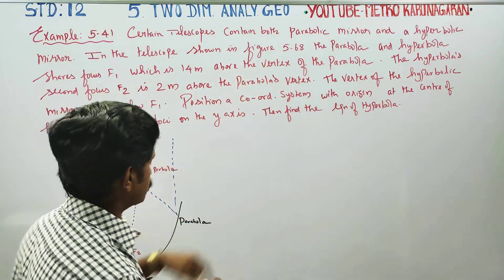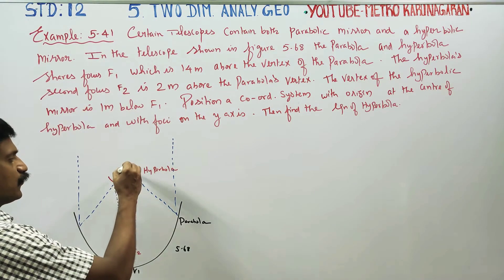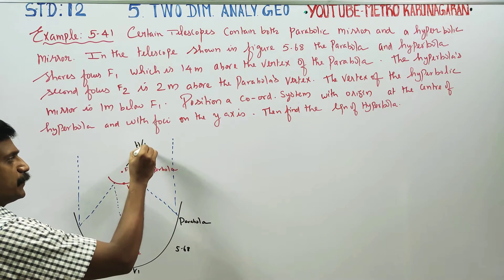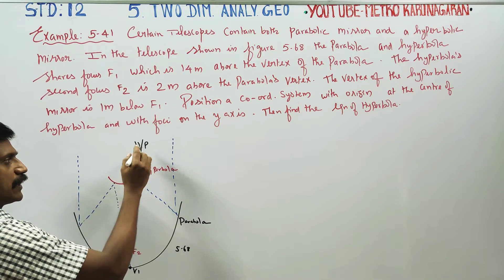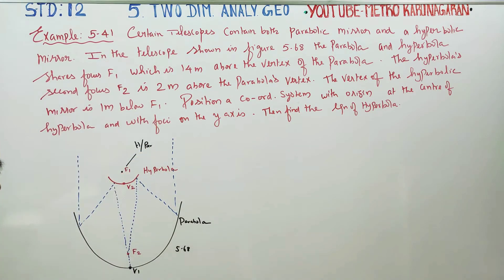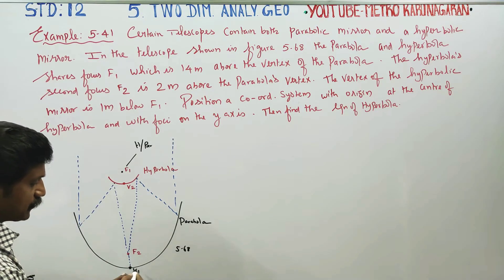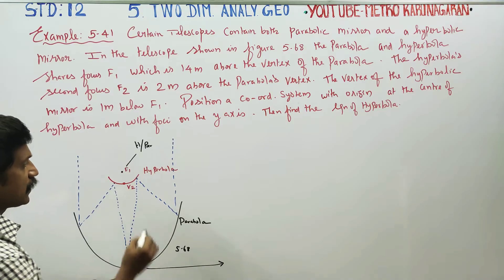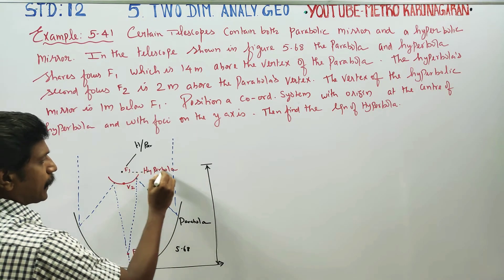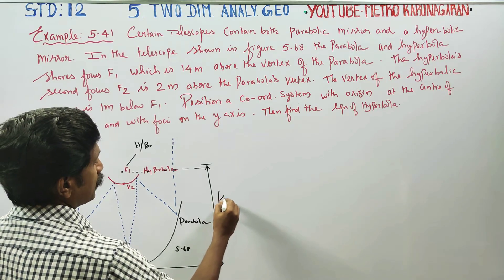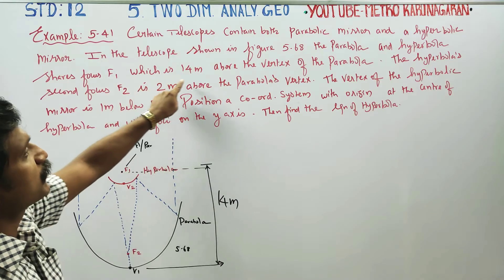In the telescope shown in figure 5.68 — this is your figure 5.68 in the book — the parabola and hyperbola share the focus F1. The focus F1 is 14 meters above the vertex of the parabola. The black point and red color markings indicate the hyperbola and parabola. The focus of F1 is 14 meters above the vertex of the parabola.